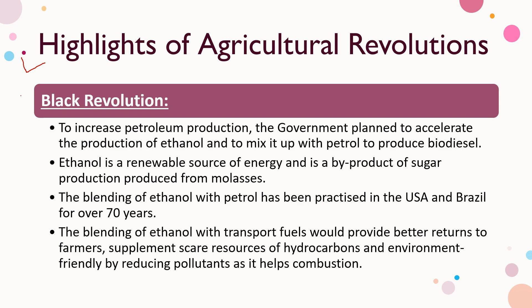Now come to the next slide covering each revolution in detail. Black Revolution was started to increase petroleum production. The government planned to accelerate the production of ethanol and mix it with petrol to produce biodiesel. Black Revolution was started to produce biodiesel by mixing ethanol with petrol. Ethanol is a biodiesel mixed with petrol and is a renewal source of energy and a byproduct of sugar production.